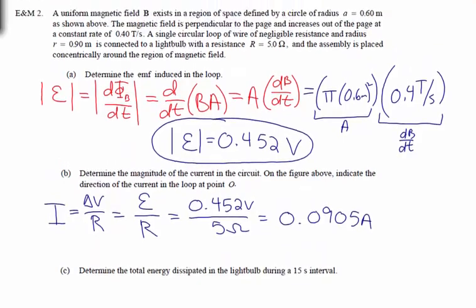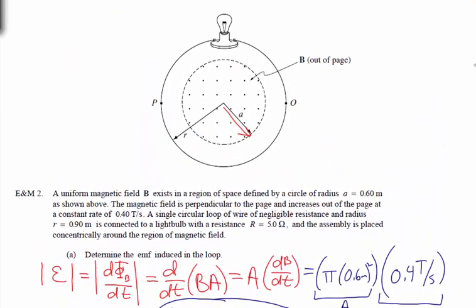The direction of the current comes from Lenz's law, which says nature doesn't like change. There's a certain flux through this loop, and Lenz's law says the loop wants that flux to stay constant. Since the magnetic field is out of the page and getting stronger — an increasing outward flux — Lenz's law says a current will be induced that tries to cancel out that change in flux. The induced voltage causes a current that tries to cancel any change in magnetic flux.